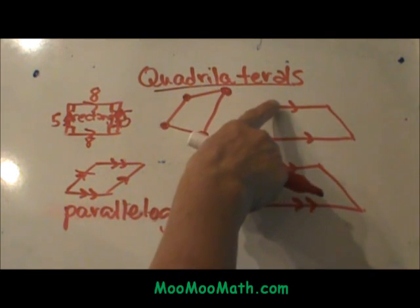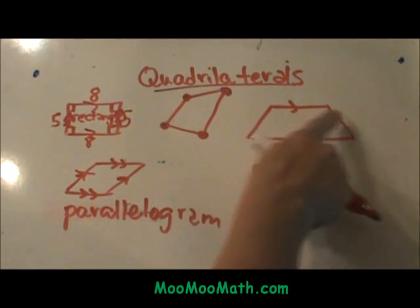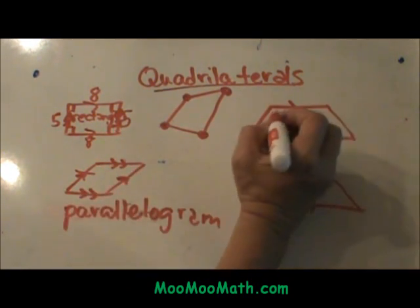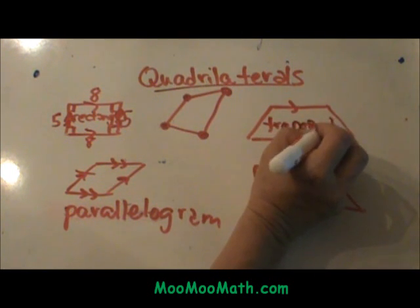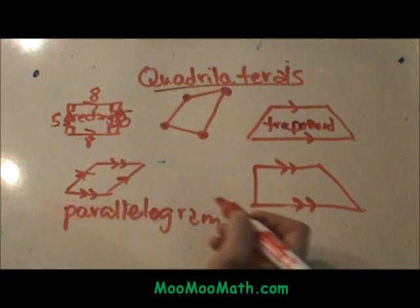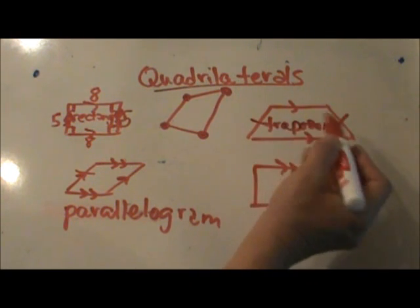Over here we have these two sides that are parallel to each other. These two aren't parallel to each other. So that is a trapezoid. That looks like it could be an isosceles. It is not marked. Isosceles would mean that these two sides are the same. It wasn't marked so I wasn't sure.